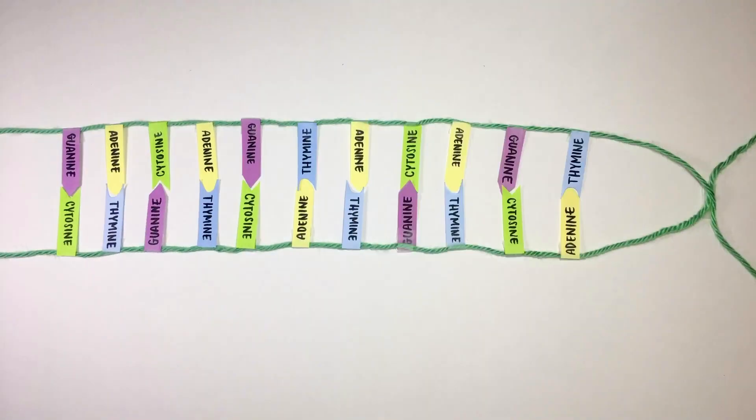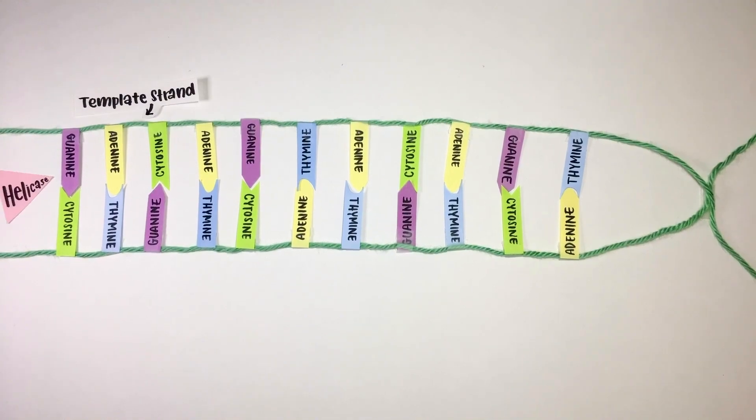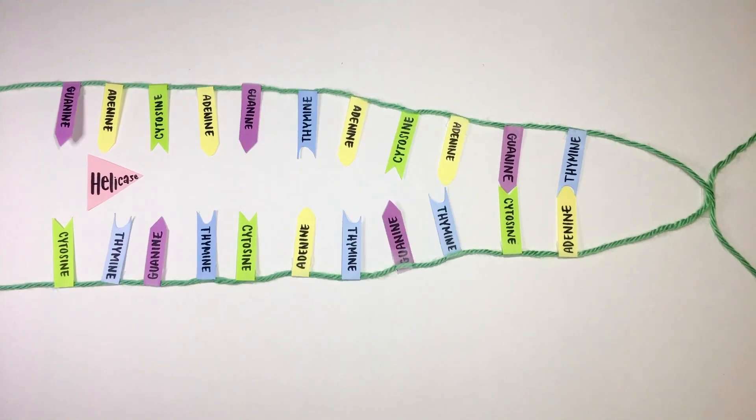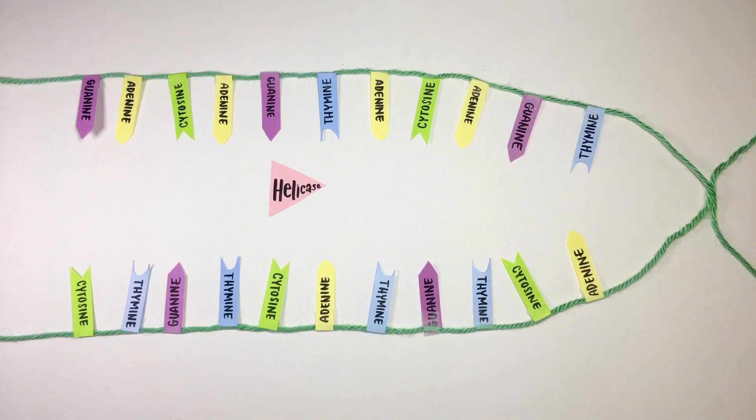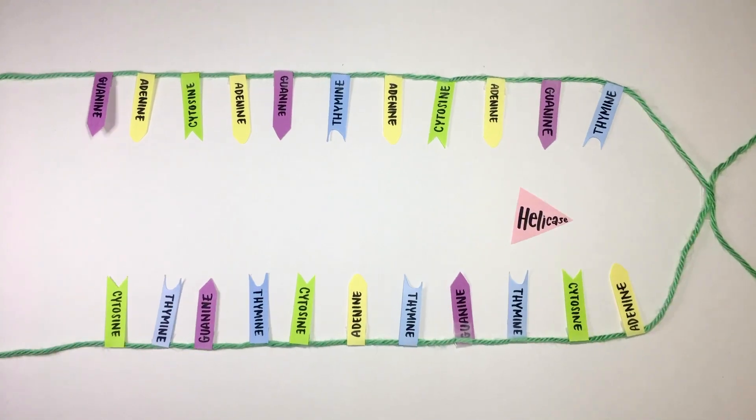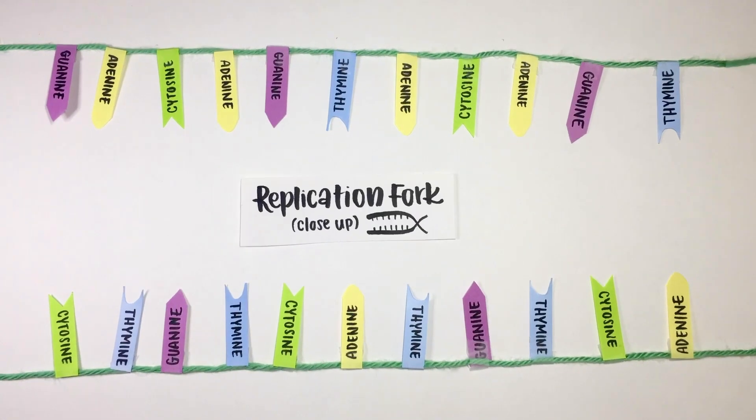To start off DNA replication, an enzyme called helicase separates the two parental strands of DNA, breaking apart the hydrogen bonds between DNA base pairs and creating a replication fork.